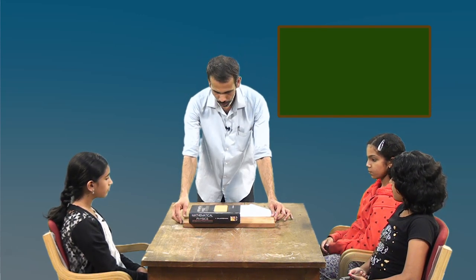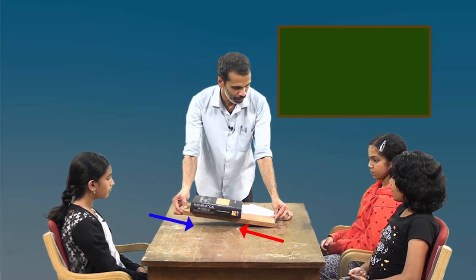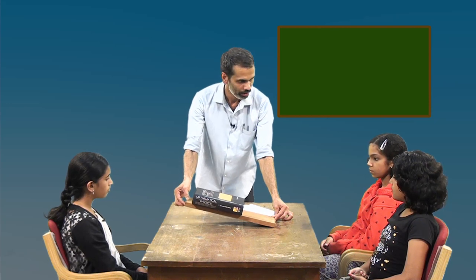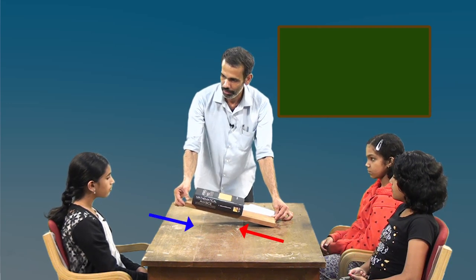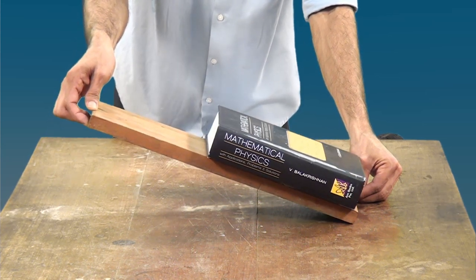Let us do one more activity. I have kept one book on the top of a wooden plank. I am going to tilt one end of this plank slowly. When I tilt, the book is at the same position. If I tilt more, the book is again at the same position. If I tilt more, slowly the book starts to slide down and it comes down.